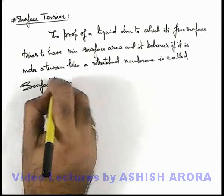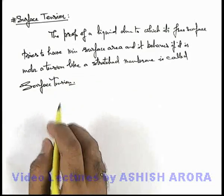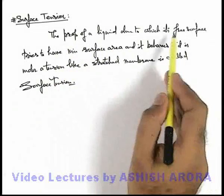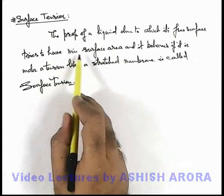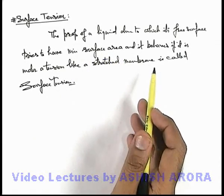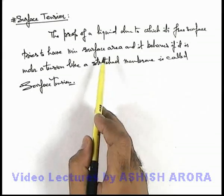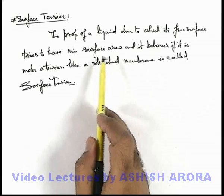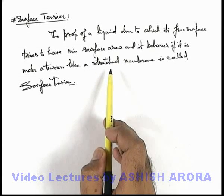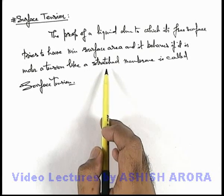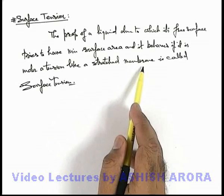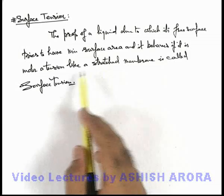Here you need to understand this property of a liquid very carefully. As we are writing, it is a property of a liquid due to which the free surface of the liquid tries to have minimum surface area. Like a rubber sheet — if you stretch it and release it, it will automatically have a tendency to reach a situation of minimal tension. So that is the stage where we can say every liquid surface behaves like a stretched membrane, or it behaves as if it is under a tension.